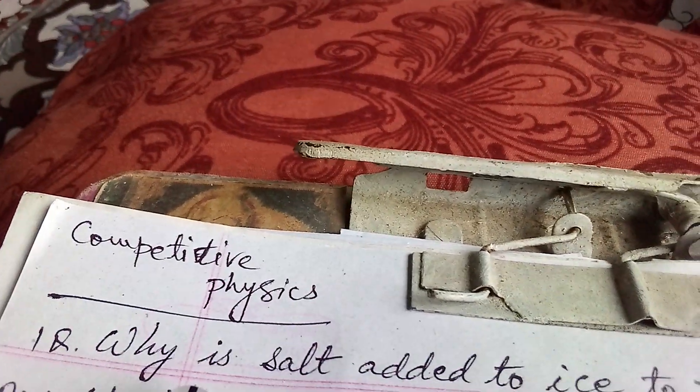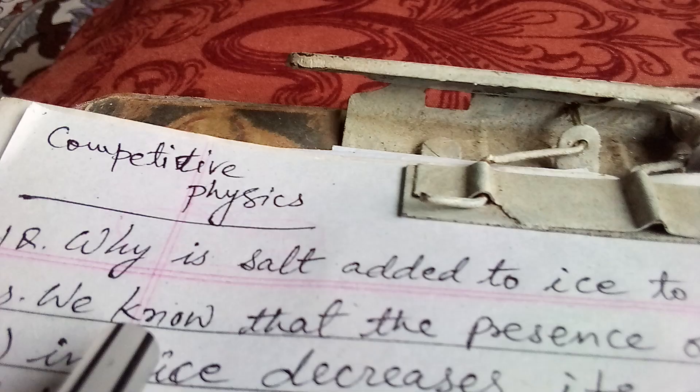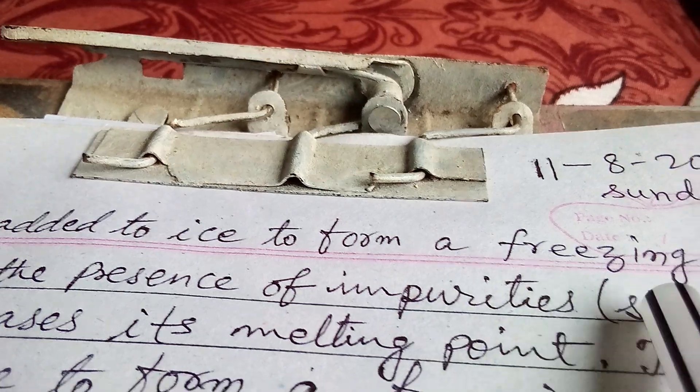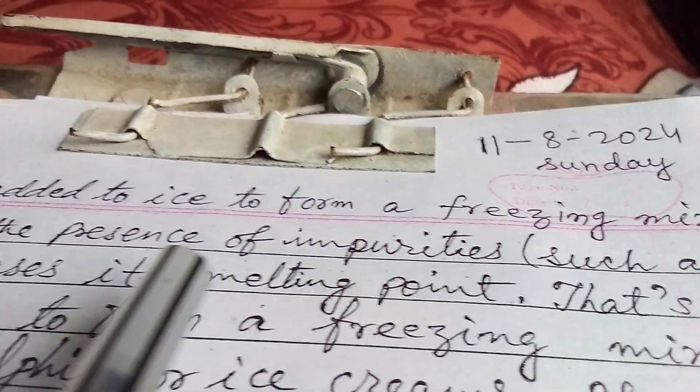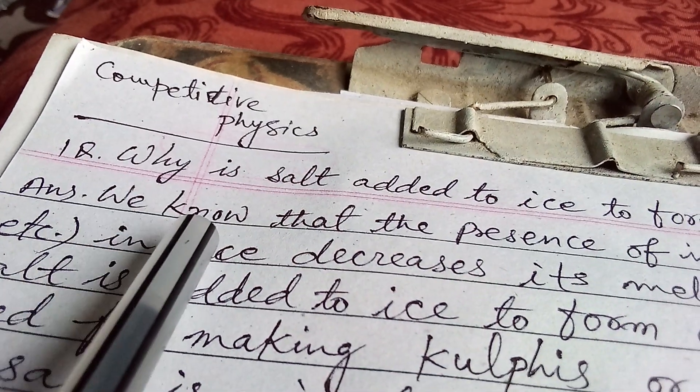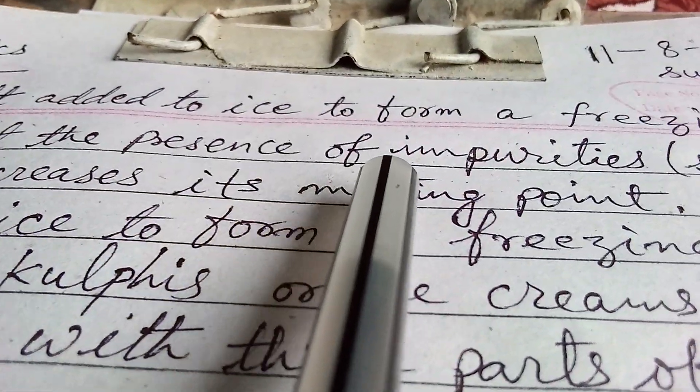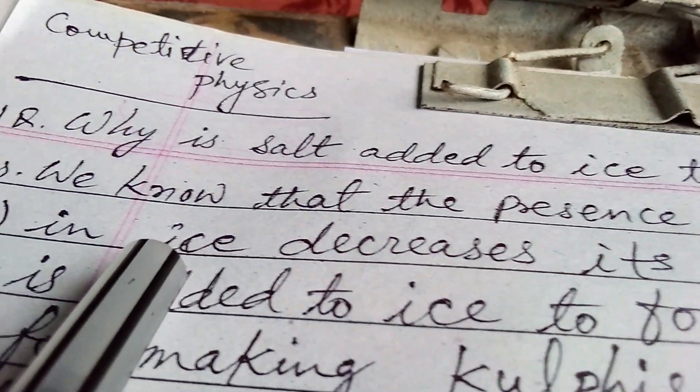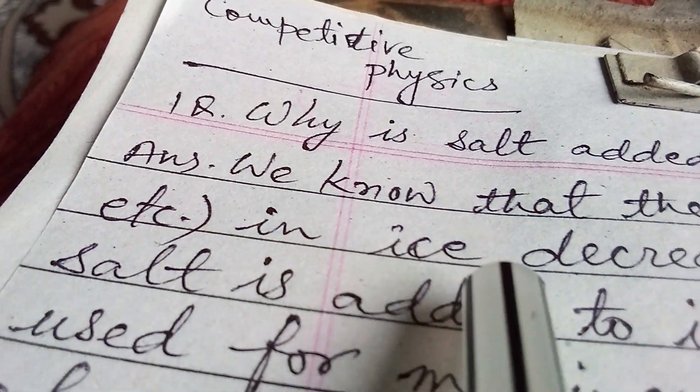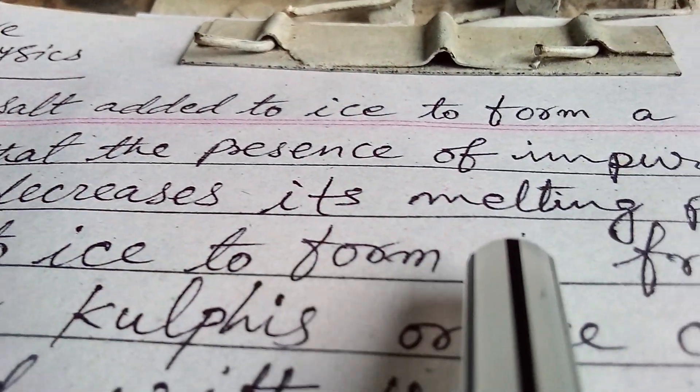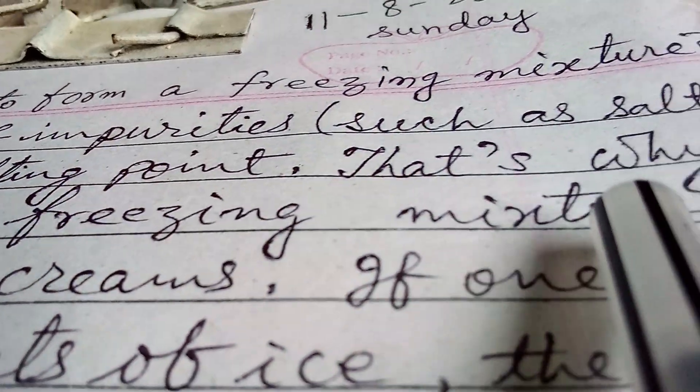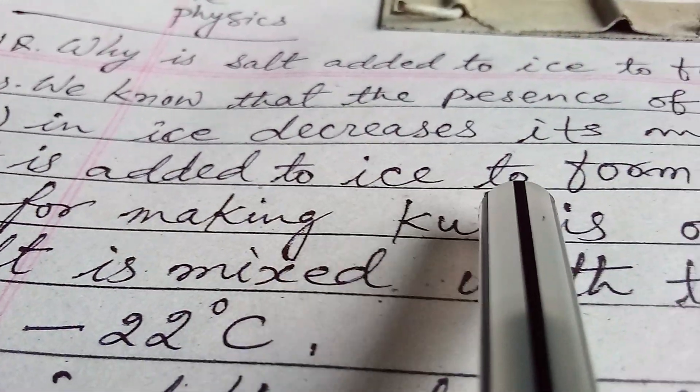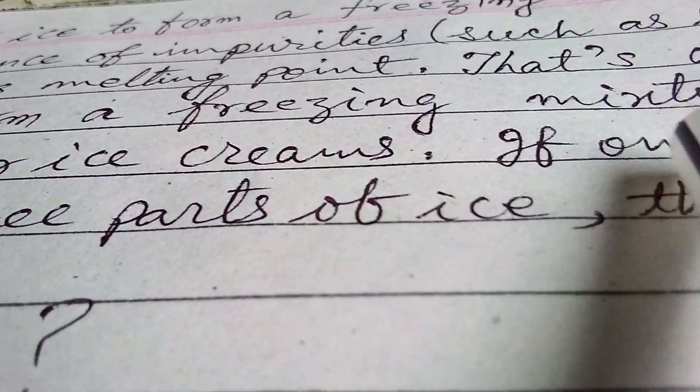My dear students, today I am going to explain some questions in physics. The first question is: why is salt added to ice to form a freezing mixture? The answer is, we know that the presence of impurities such as salt in ice decreases its melting point. That's why salt is added to ice to form a freezing mixture.